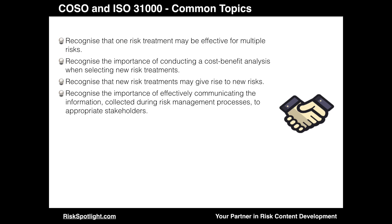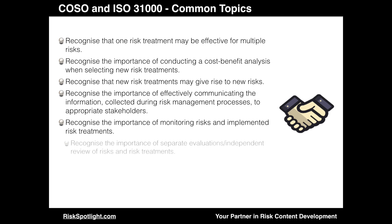They both recognize the importance of effectively communicating the information collected during the risk management process to appropriate stakeholders, the importance of monitoring risks and implemented risk treatments, and the importance of separate evaluations or independent reviews of risks and risk treatments. So as you can see, there are many similarities between COSO ERM and ISO 31000 on many key areas, which should be good news for organizations who want to use both as reference to develop their own framework and processes.